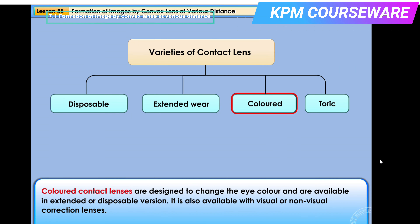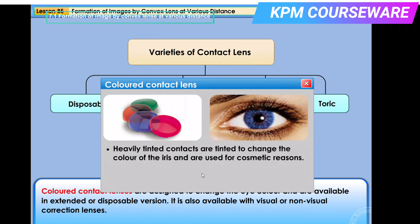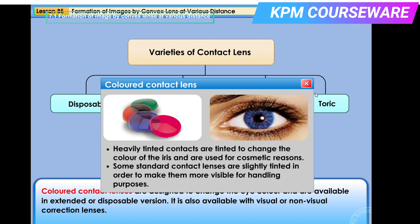Coloured contact lenses are designed to change the eye colour and are available in extended or disposable versions, with or without visual correction. Heavily tinted contacts are tinted to change the colour of the iris for cosmetic reasons. Some standard contact lenses are slightly tinted to make them more visible for handling purposes.